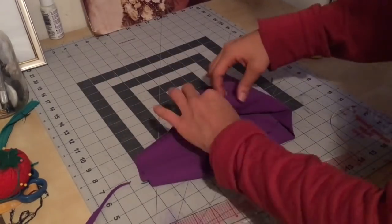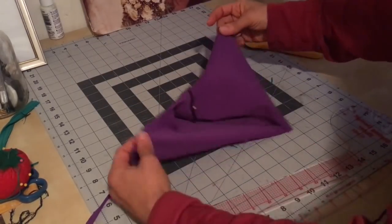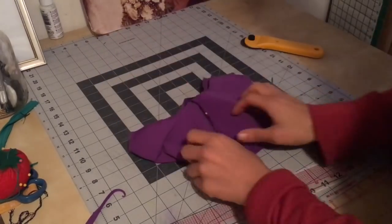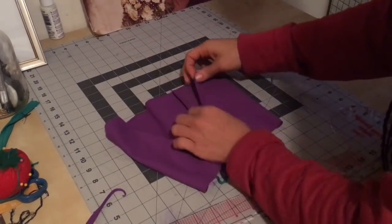Then you're going to sew all the way around to a U shape. It's going to look like a U once you're finished sewing it. So let's take this to the machine and sew that.